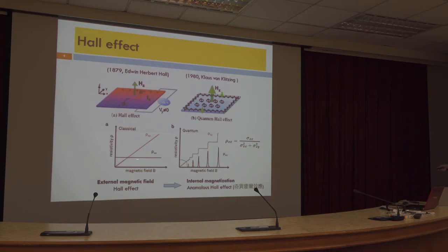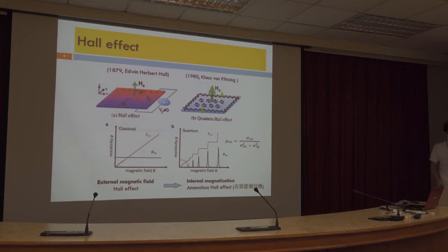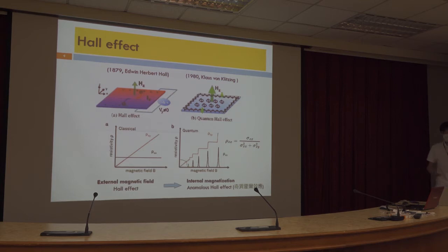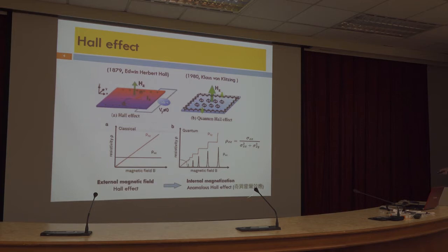In addition, Edwin Hall also observed the Hall Effect in magnetic material without applying an external field. He was very confused because he observed the Hall Effect but didn't apply the magnetic field. He called it the anomalous Hall Effect. Today we know the internal magnetization of the magnetic system can replace the role of the external magnetic field. And the quantum version is the quantum anomalous Hall Effect.